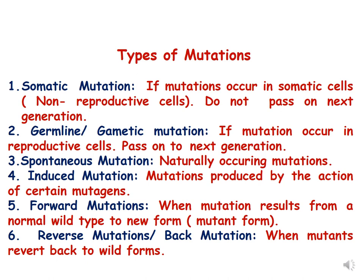The first term is somatic mutation: if mutations occur in somatic cells, which are non-reproductive cells, they do not pass on to the next generation and are called somatic mutations. Gametic mutation, as the name suggests, happens in reproductive cells and these are also called germline mutations. Germline or gametic mutations pass on to the next generation.